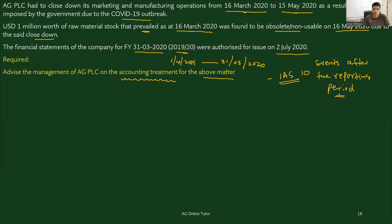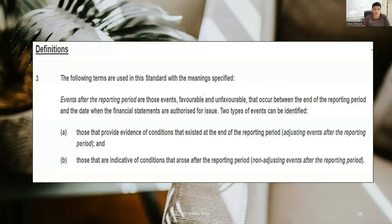Now let's move on to the relevant section of the standard, then we'll come back to this question and try to get the answer. The standard defines: events after the reporting period are those events — favorable or unfavorable — that occur between the end of the reporting period and the date when the financial statements are authorized for issue. As per this question, the end of the reporting period is 31st March 2020.